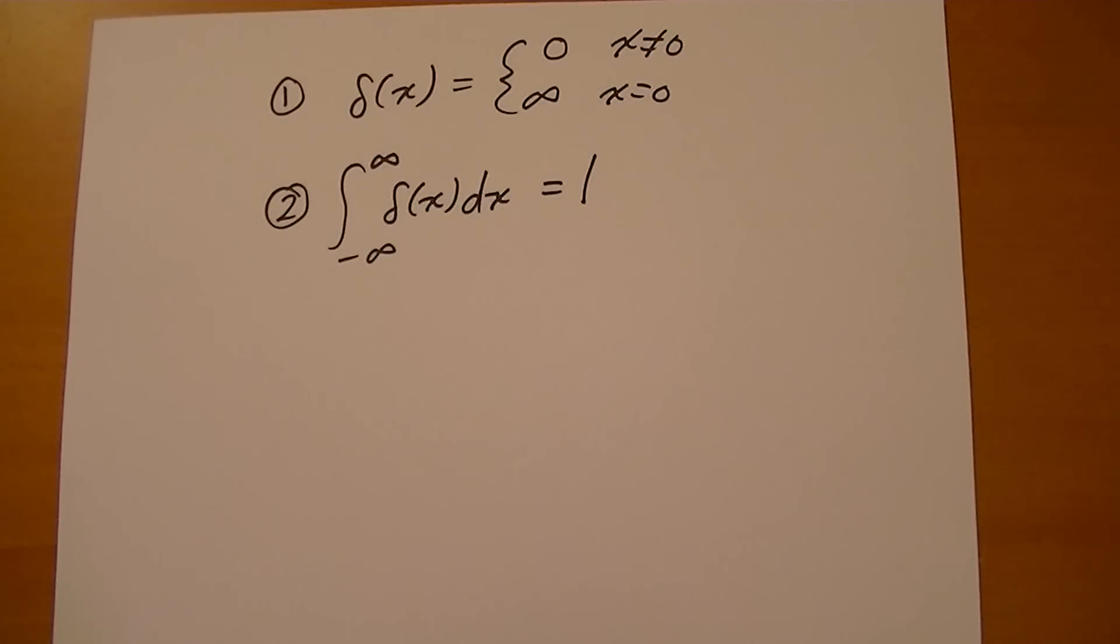Dirac introduced this function because it helped him do the math, and mathematicians were upset with him because you can't just invent math that works. You have to have a theoretical basis for it, and of course, this doesn't have a theoretical basis when it was introduced. I think mathematicians have worked out how you can actually derive this function and it makes sense and everything.